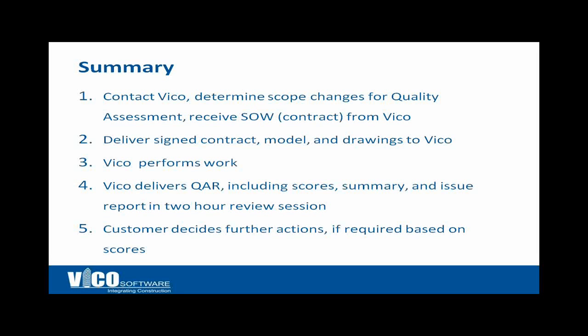Let me summarize the process — it's very simple. You contact VICO and determine the scope by including and excluding scope. You receive a simple contract from VICO for $2,000, sign it, and deliver the contract, model, and drawings. We'll perform the work — approximately two man-weeks — and deliver a completed quality assessment review, including a full score by system, a summary score, and a full issue report, which we will review with you in a two-hour session. Then you decide: is the model good enough to use as is, do you want to repair things, or rebuild certain systems?